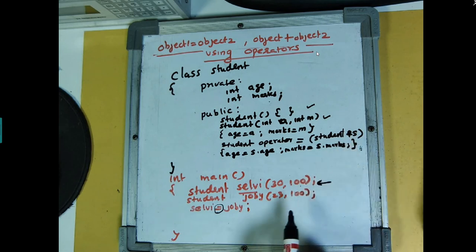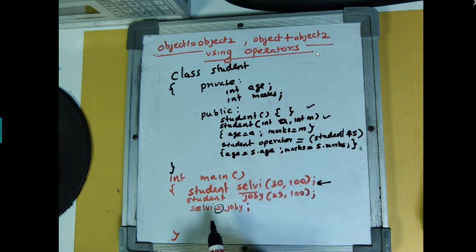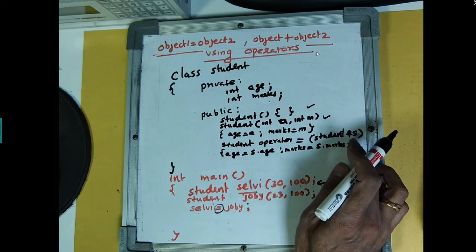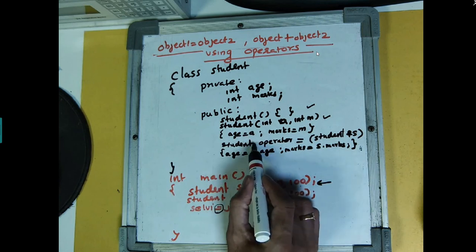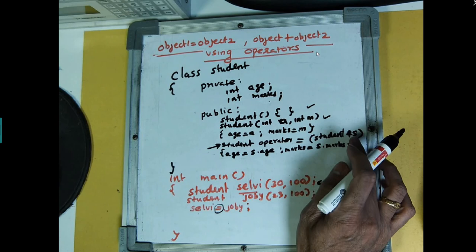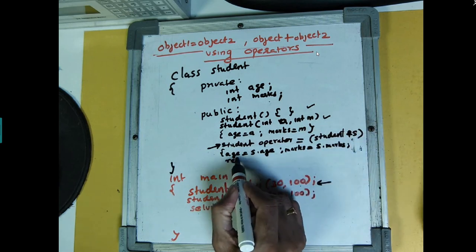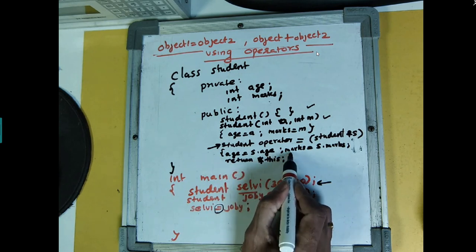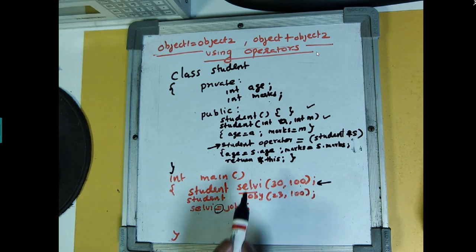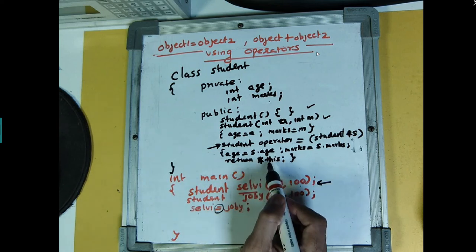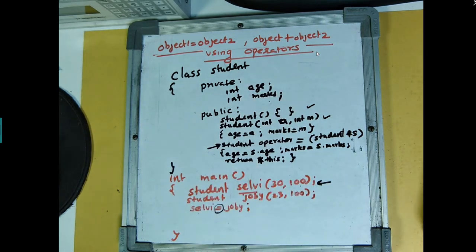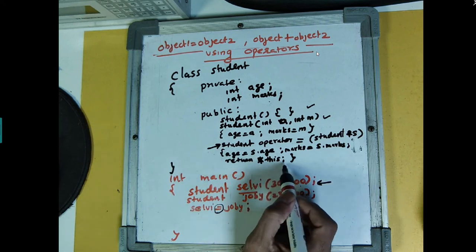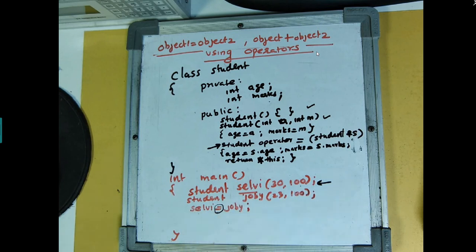This is how you implement object1 equals object2. Since this function is returning a Student type, you also need to add return *this at the end. The this pointer refers to the current object, and returning *this makes this function work correctly so that Selby equals Joby is properly implemented.